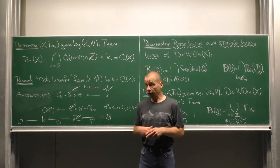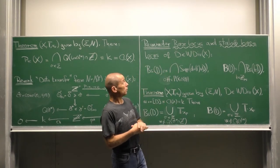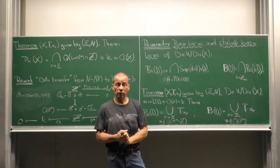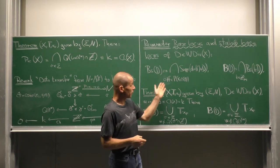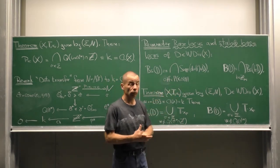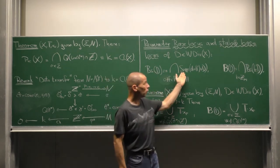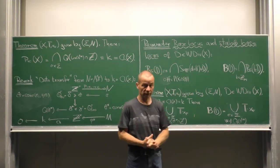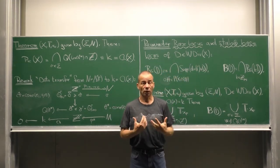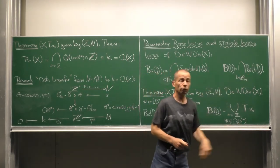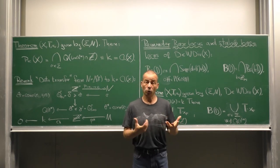The next application of that principle concerns base loci. Recall that for divisor D on a normal variety x, the base locus is an intersection over all non-zero sections of this divisor and we intersect the support of divisor f plus D. The stable base locus is the intersection of all the base loci of positive multiples of our D.